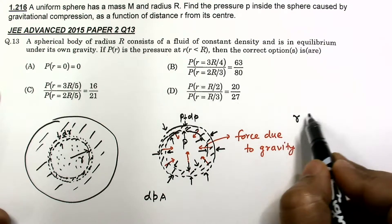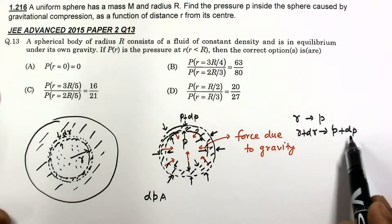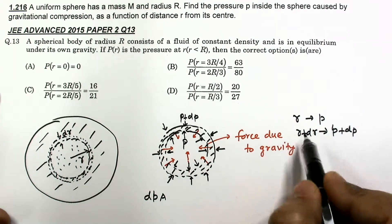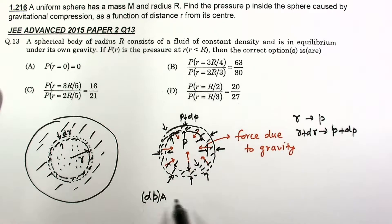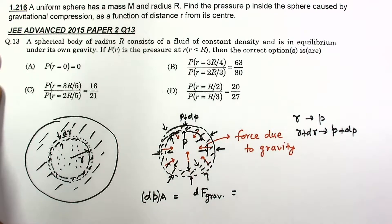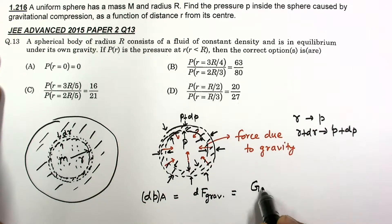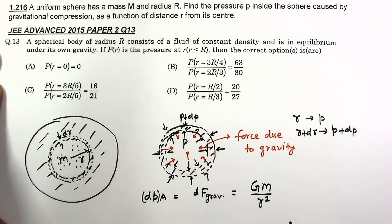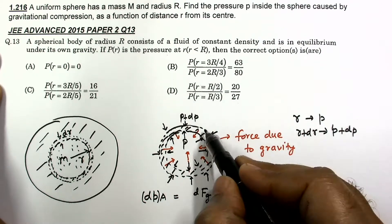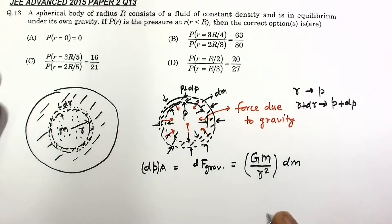In the mathematical formulation, the pressure difference force is dp times area A, which equals the gravitational force dF. The gravitational field caused by mass m inside radius r is G·m divided by r squared, multiplied by the mass dm in this layer. We need to substitute proper values into these expressions.